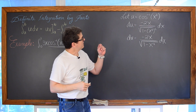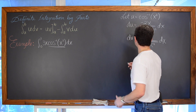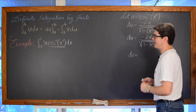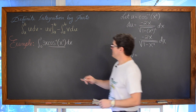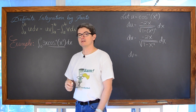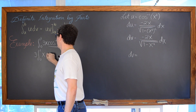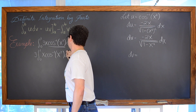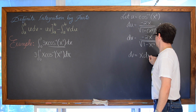So if my u is going to be the inverse cosine of x squared, then my dv is going to be equal to the rest of the integrand. I am going to go ahead and move the constant 3 out in front of my definite integral, giving me 3 times the definite integral from 0 to 1 of x times the inverse cosine of x squared dx. And now my dv is going to be equal to x dx.